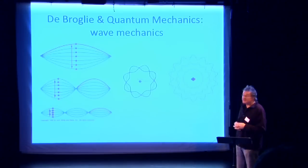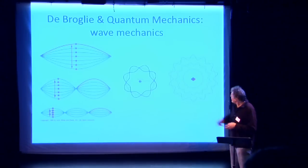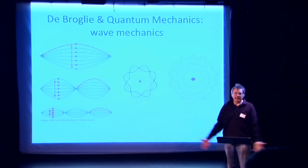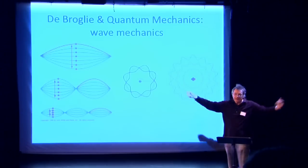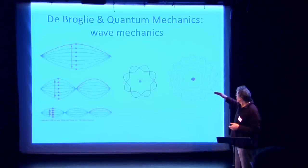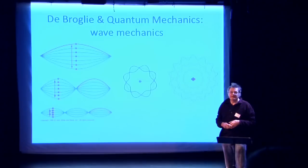De Broglie, who described the quantization of atoms, used this type of theory. Imagine that the string is a circle, that would be the electron in some orbit. You can fit in a certain number of waves perfectly into a circle, giving you the different modes of vibration of the electron in the atom. That perfectly explains the quantum mechanics of atoms.